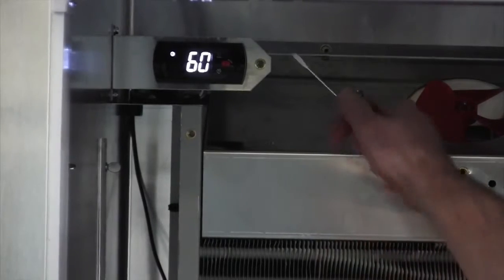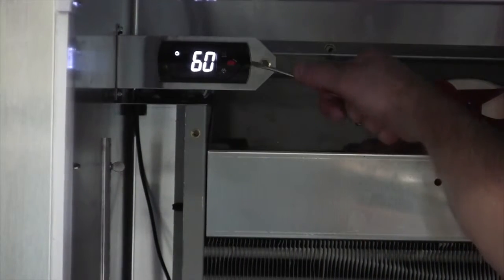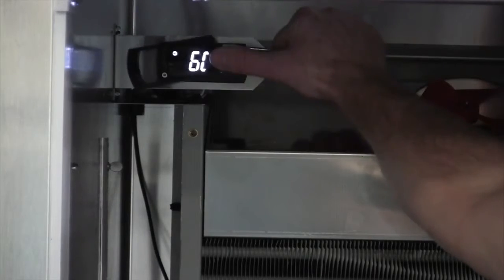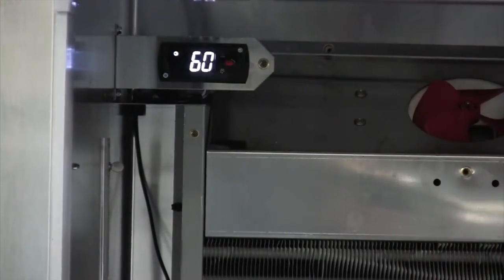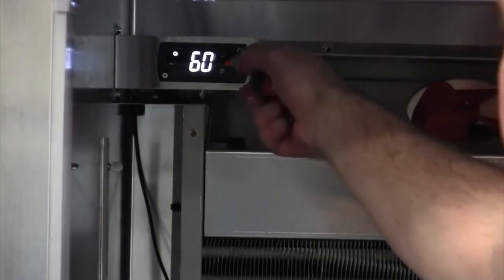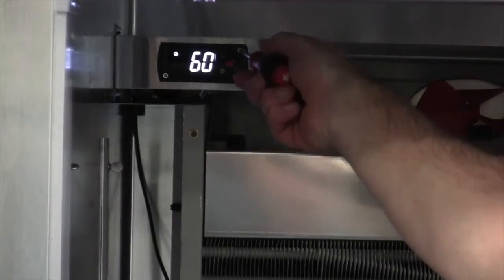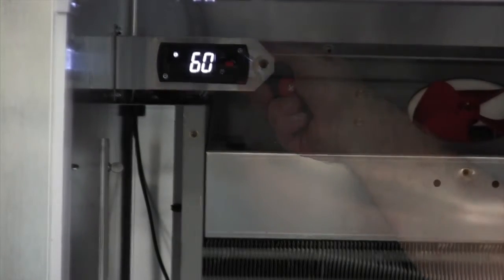To remove the temperature display, use a small flat screwdriver to carefully lift up on the plastic bezel. Then use a number one Phillips and turn the two screws a quarter turn counterclockwise. The display can now be removed.